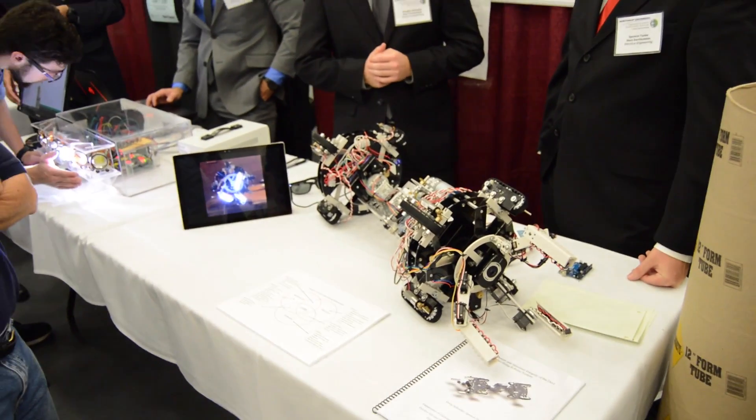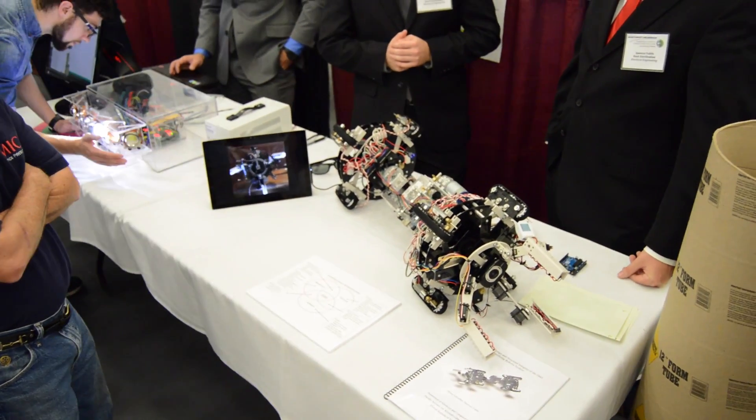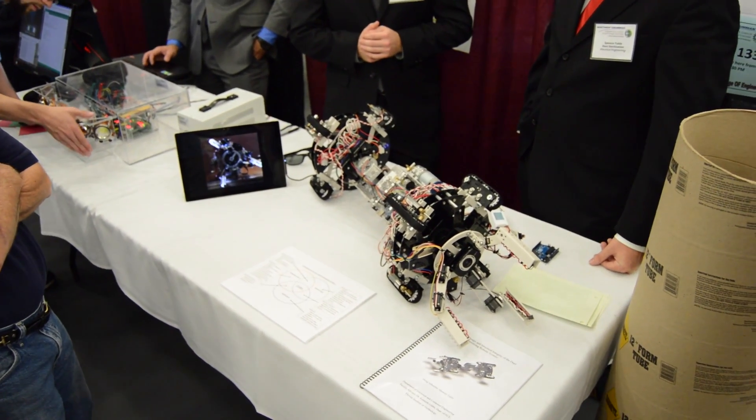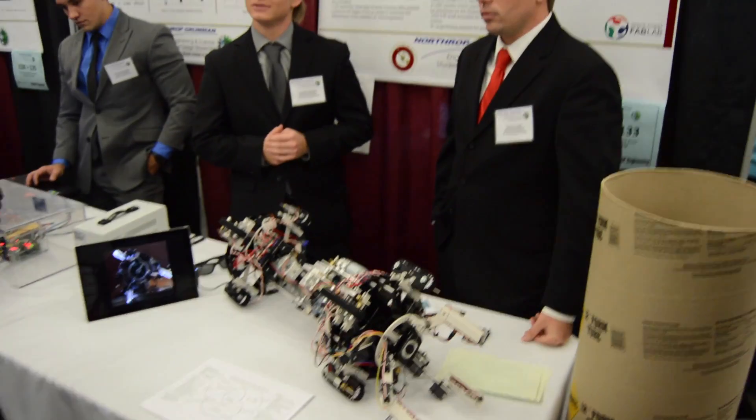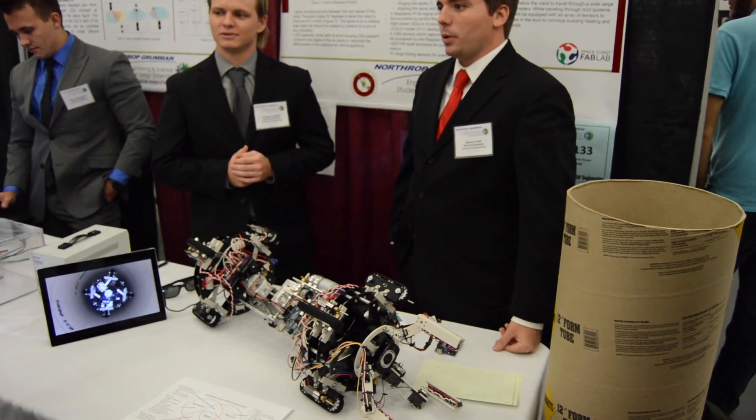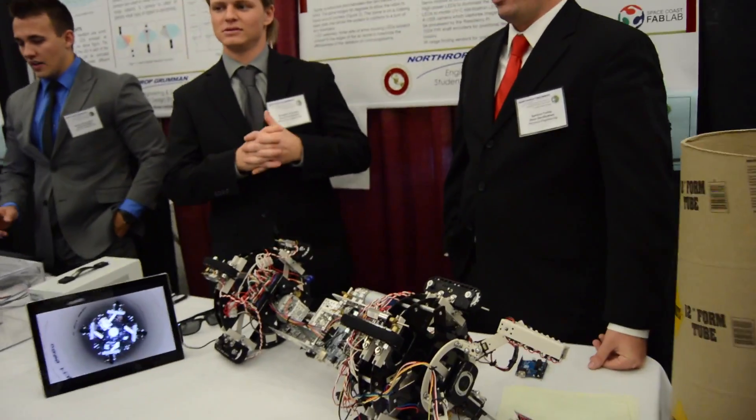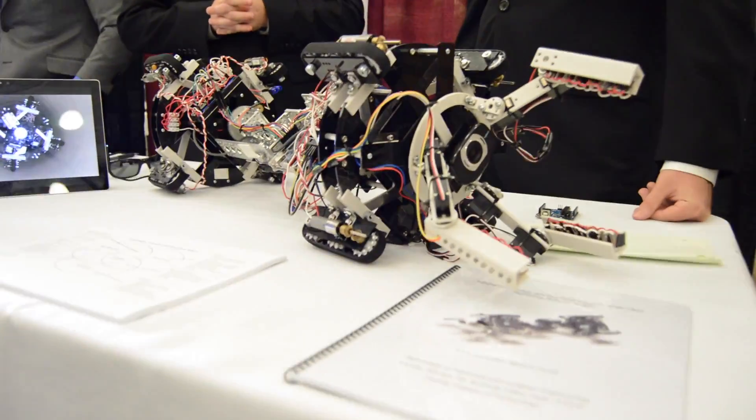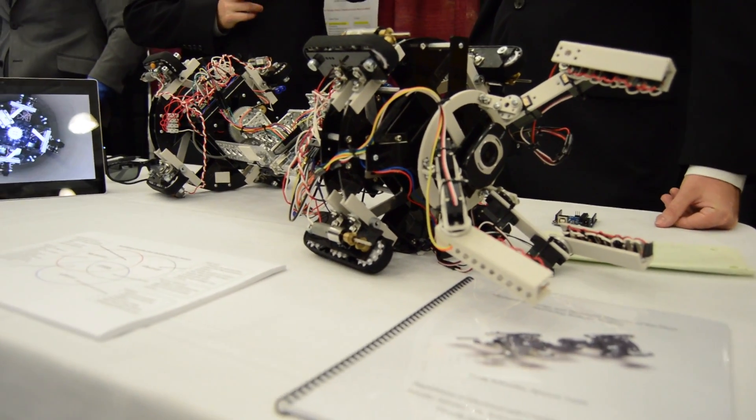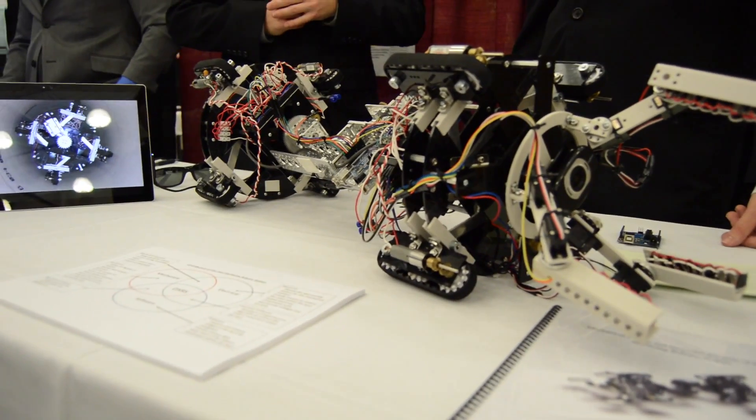We designed the robot so we didn't have to give it any knowledge of the duct layout before it goes in, because different buildings have different layouts. We equipped the robot with sensors and a camera. When the robot goes in, it detects things like turns and ends of pipes.